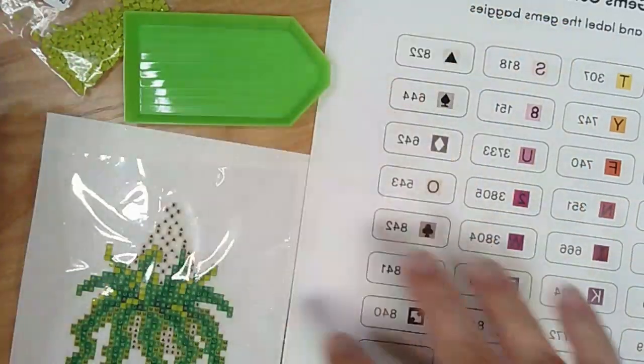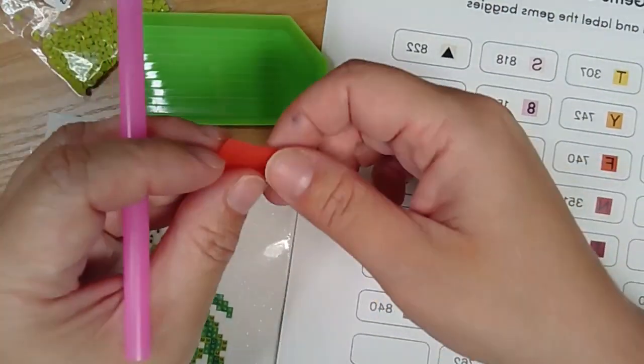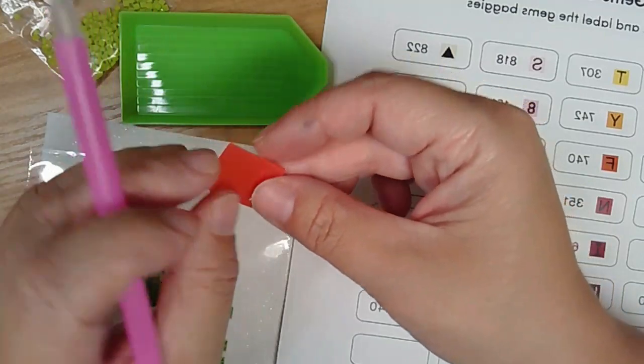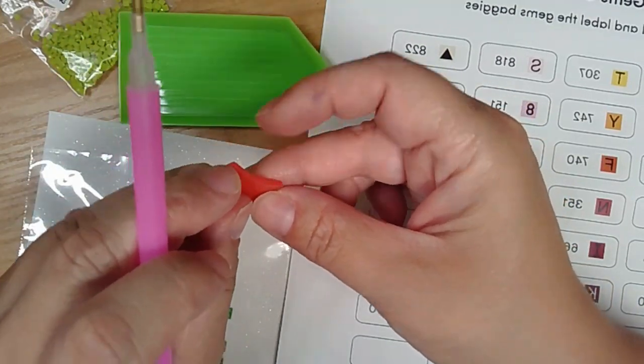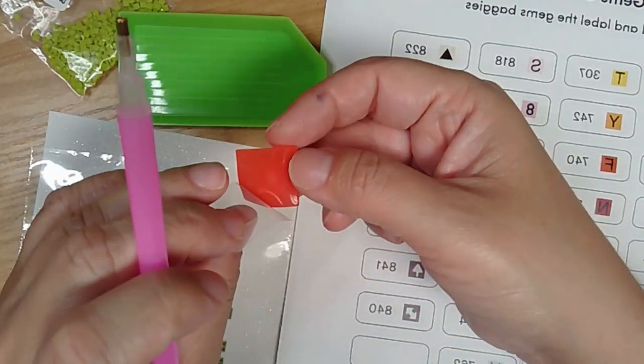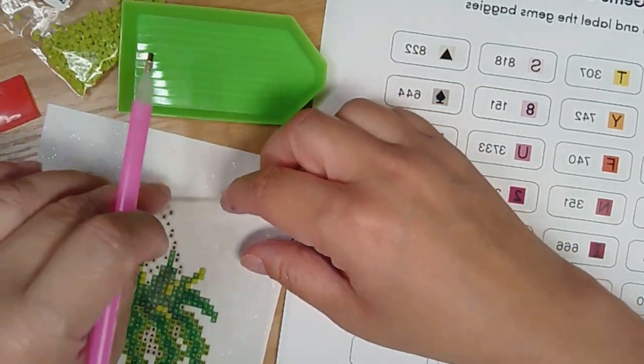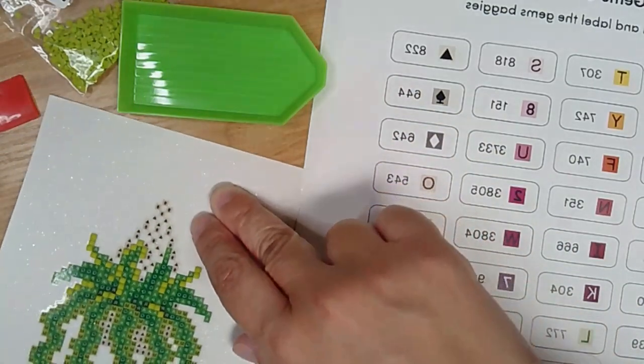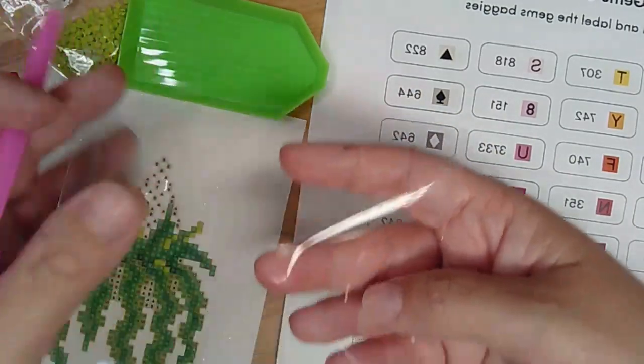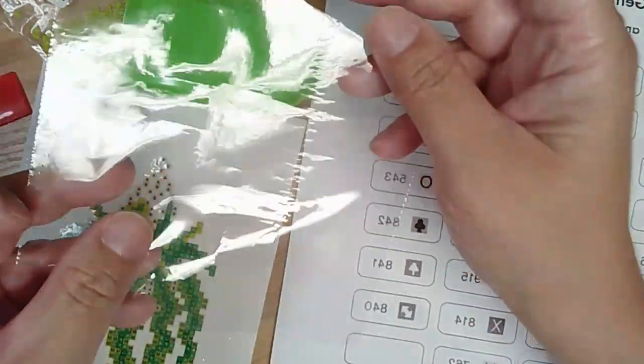The first thing you're going to want to do is peel one of the plastic backings off of this little wax square. You're also going to want to peel this plastic off of your print, but don't throw it away because later on if you get tired and want to put it away, you can cover this back up.